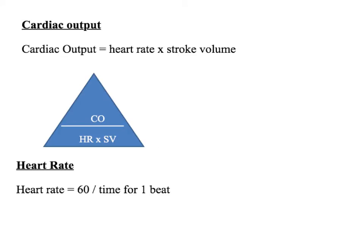First of all, cardiac output, which is the heart rate times the stroke volume. The cardiac output is the volume of blood pumped out of the heart per minute. If you like a triangle, this is the triangle: cardiac output at the top, heart rate and stroke volume at the bottom.